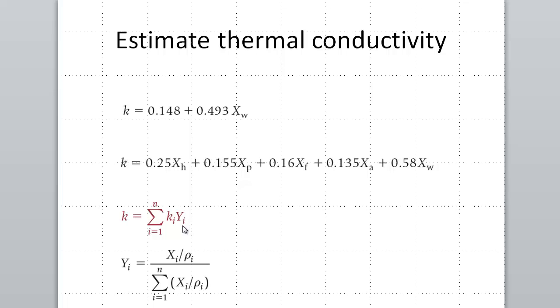Now Yi is given by this equation, where Xi is the weight fraction of the ith component, and rhoi is the density of the ith component.